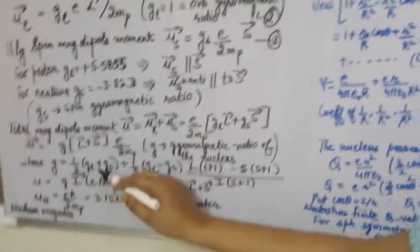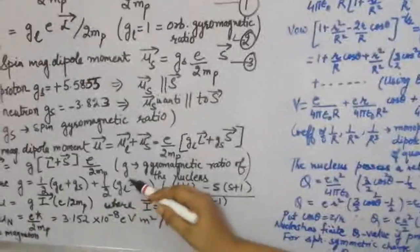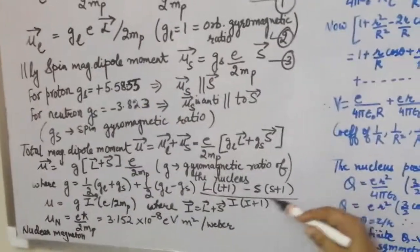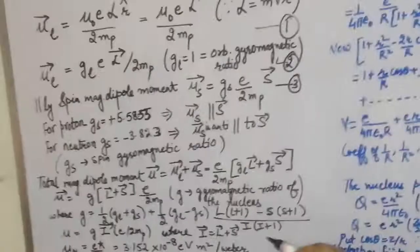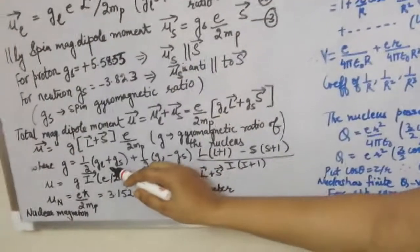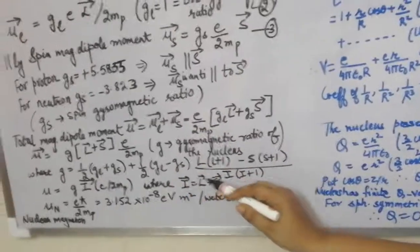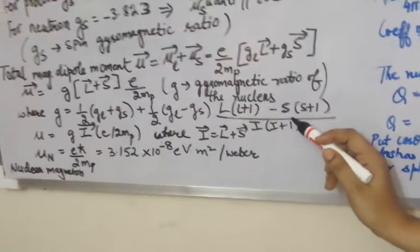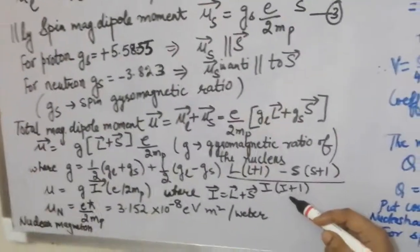After simplification, the g value has the formula: g = ½(g_L + g_s) + ½(g_L − g_s) · [L(L+1) − S(S+1)] / [I(I+1)], where g_L and g_s are the gyromagnetic ratios of the orbital and spin factors, L is the orbital angular momentum, S is the spin angular momentum, and I is the total angular momentum.